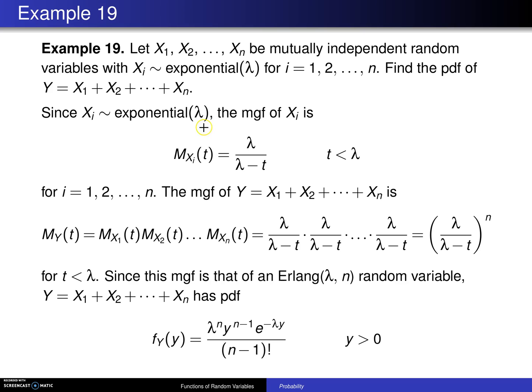The moment generating function of the sum of the x sub i's is the product of the moment generating functions. That product is going to be that same moment generating function. Remember, they're all identical, so they have the same moment generating function. When you multiply those together, you get λ divided by λ minus t raised to the n power for t less than λ.